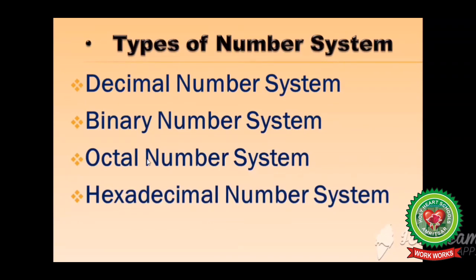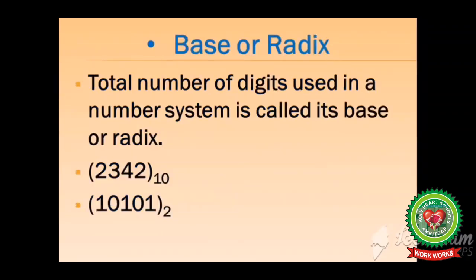Decimal number system, binary number system, octal number system, and hexadecimal number system. Students, every number system contains a particular number of base value, and the base value is the total number of digits used in the number system. Like I have written this number 2342 and its base value is 10, means it can contain up to 10 digits.